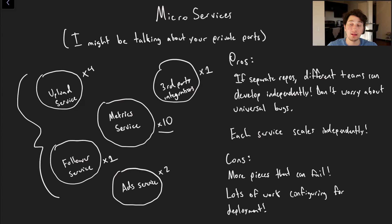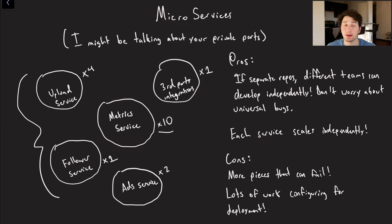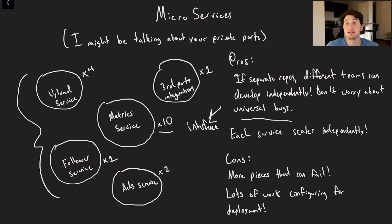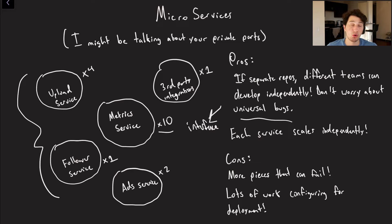It doesn't have to be the case that microservices are in separate repositories, but if they are developed separately, microservices will allow you to avoid global bugs. Additionally, teams can develop independently from one another without considerations like having to use a specific dependency or technology. You're basically decoupled and you can just agree on one common interface — creating APIs — for your microservices to connect. Each service can also scale independently, which can be more cost efficient and ultimately allow you to get more usage out of your servers, which is pretty important when you have tons of users.